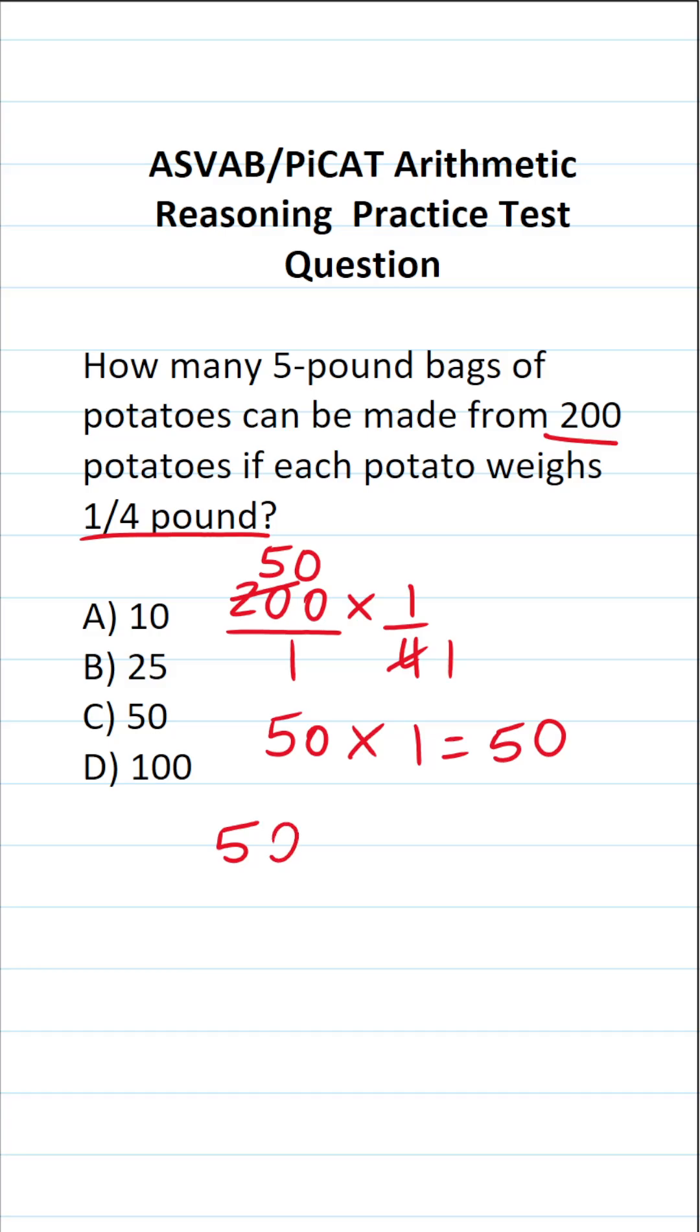So we have 50 pounds of potatoes and we're making five-pound bags of potatoes from those 50 pounds. To find out how many five-pound bags we can make, we're going to take 50 and divide it by five. 50 divided by five is 10. So we can make 10 five-pound bags from these 200 potatoes if they each weigh a quarter of a pound, which means that those 200 potatoes weigh 50 pounds.